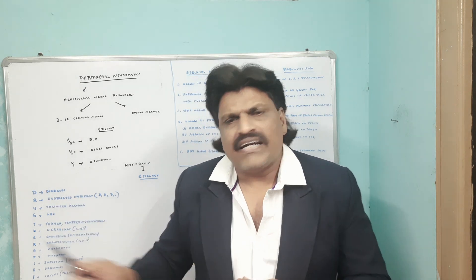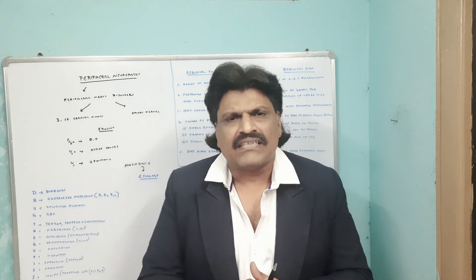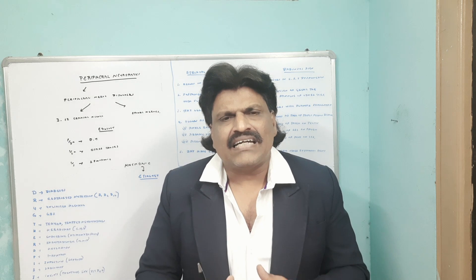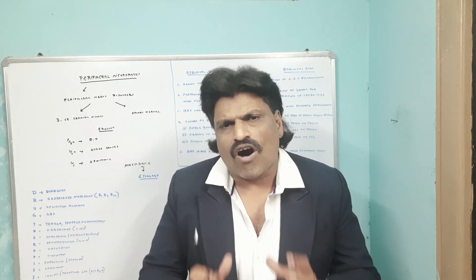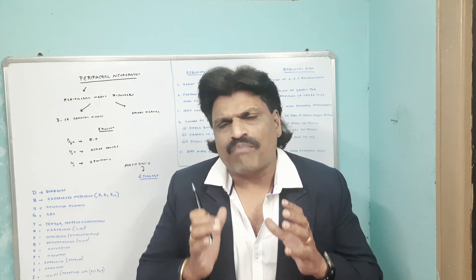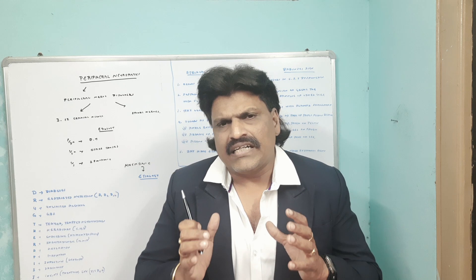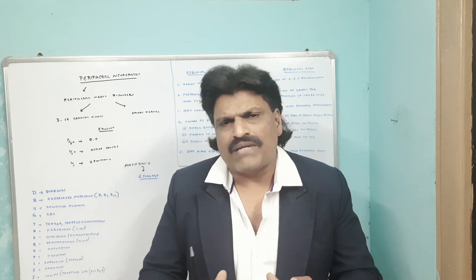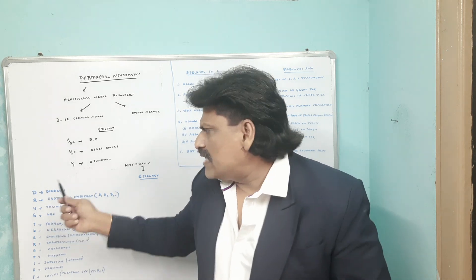In the mnemonic DRUG THERAPIST, D is for Diabetes. As mentioned, diabetes is the most common cause of peripheral neuropathy, so it takes the first place — D for Diabetes.